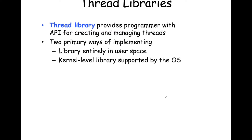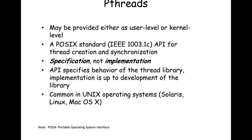The thread library is an API that provides the programmer with facilities for creating and managing threads. There are two primary ways: a library entirely in user-level space, or a kernel-level library supported by the operating system. One popular library is from POSIX, supported on Unixes like macOS and Linux. The pthreads package can be provided as either user-level or kernel-level, and defines a specification for creation and synchronization behavior.